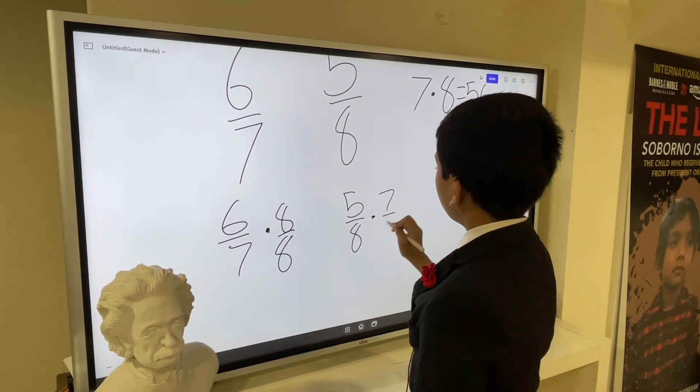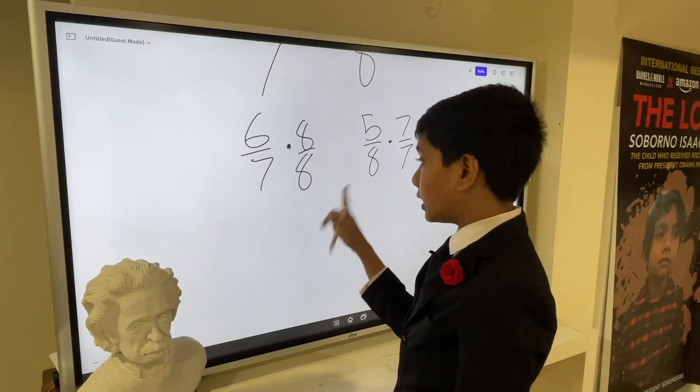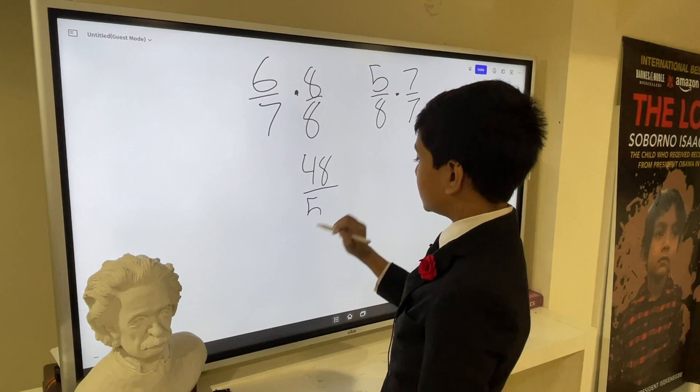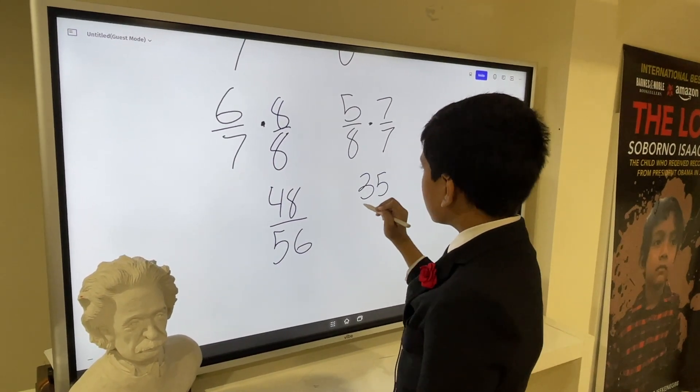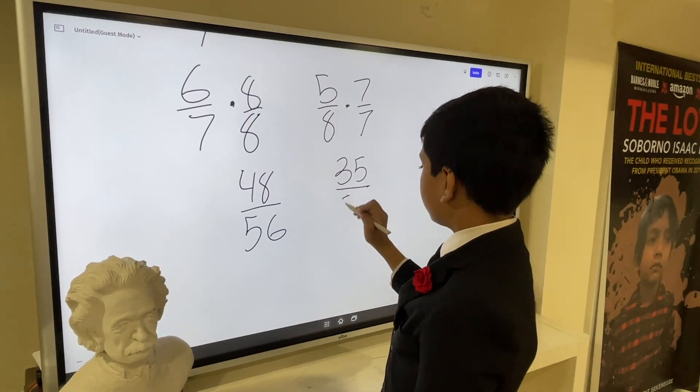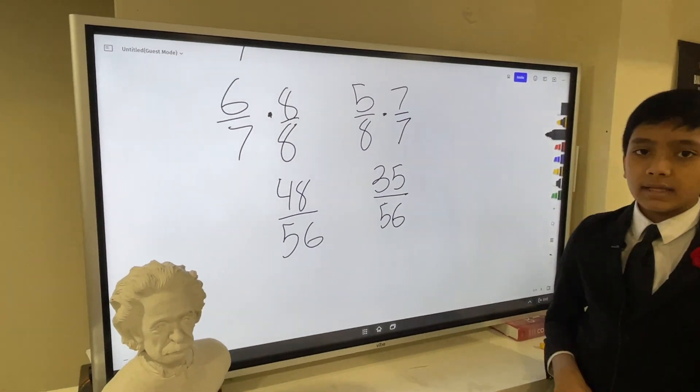Meanwhile, we can do the same thing for five over eight, multiplying it by seven over seven. Six times eight is 48. Seven times eight is 56. Five times seven is 35, and eight times seven is 56.